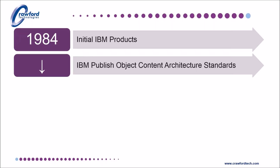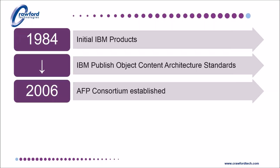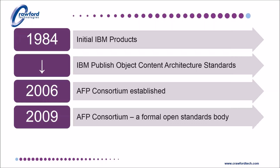All these enhancements were meticulously documented in a series of object content architecture reference documents. In 2006, following successful collaboration on the colour management open architecture, IBM invited printer manufacturers and document software companies to form the AFP consortium to support and build the AFP standard as an open architecture. In 2009, this was formally recognised and the AFP consortium became a formal open standards body responsible for the promotion and development of the AFP specifications.